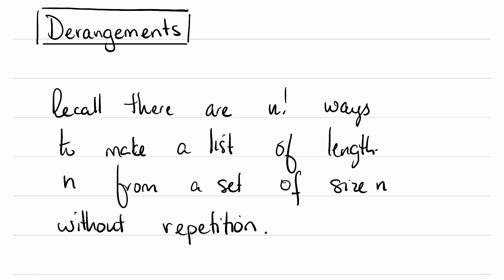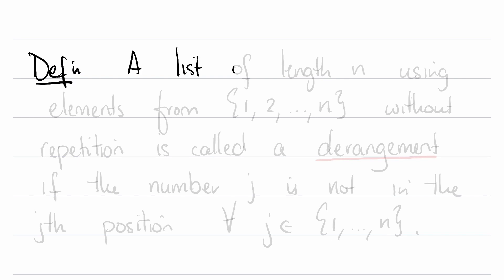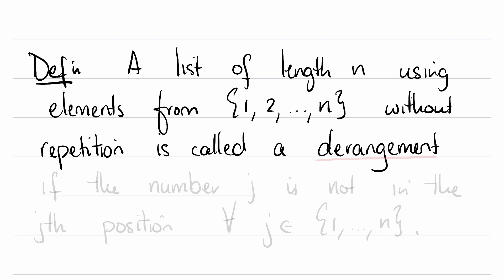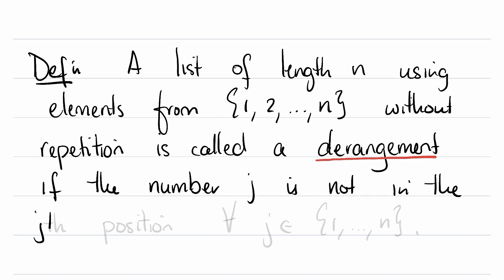A derangement is a kind of list. Definition: a list of length n using elements from the set of integers from 1 to n without repetition is called a derangement if the number j is not in the jth position in the list for all j from 1 to n.